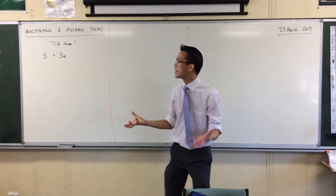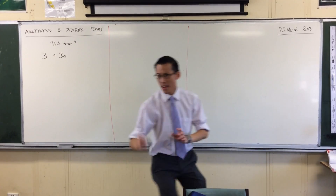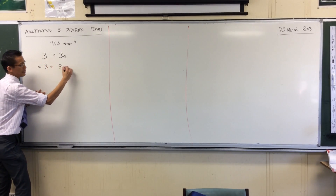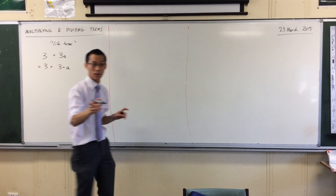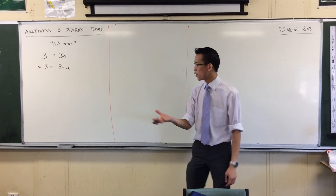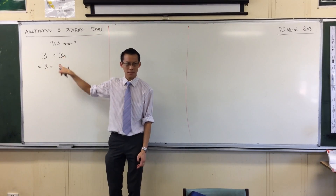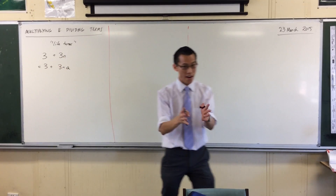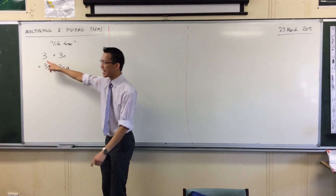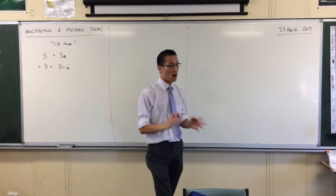There's a couple of things I noticed about these. They are not like terms. The first thing you've noticed is there's multiplication happening in here — it's happening on the sly. This is really shorthand for 3 plus 3 times a. The big thing I'm looking for that makes these unlike is that there's algebra hanging around here — a pronumeral, a variable, an unknown. And over here I just have a number. So these guys are, in fact, unlike.